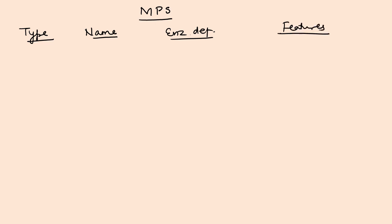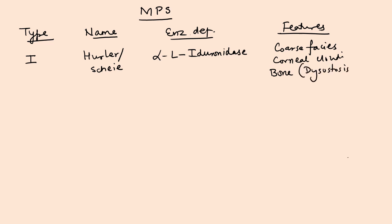So the next thing is mucopolysaccharidosis. These are also lysosomal storage diseases. The key ones we will be talking about: Type 1 is known as Hurler syndrome. A variant of this is Scheie syndrome. Enzyme deficient is alpha-L-iduronidase.